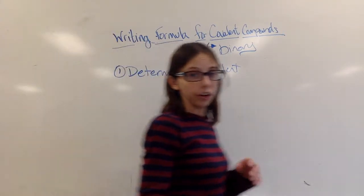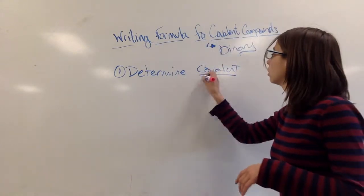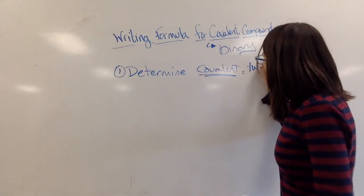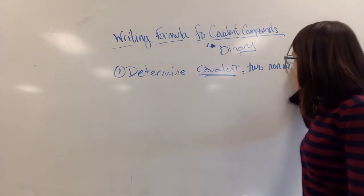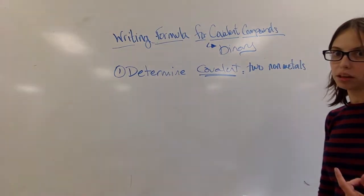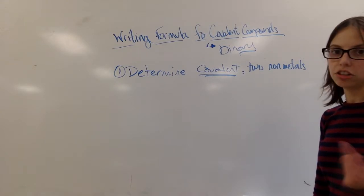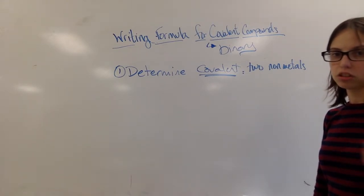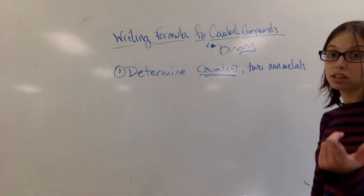There's two ways you can do that. Remember, a covalent bond consists of two non-metals. So if you look at the name, and it's got two non-metal elements in it, like hydrogen and oxygen, or carbon and oxygen, or nitrogen and oxygen, it's covalent.